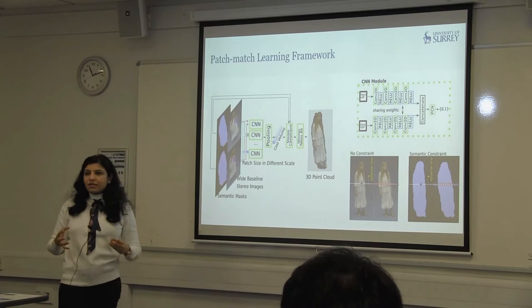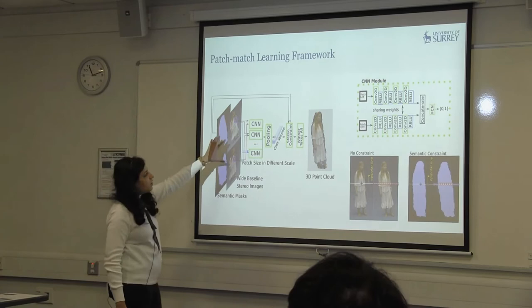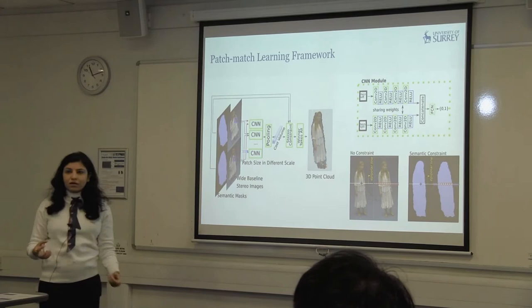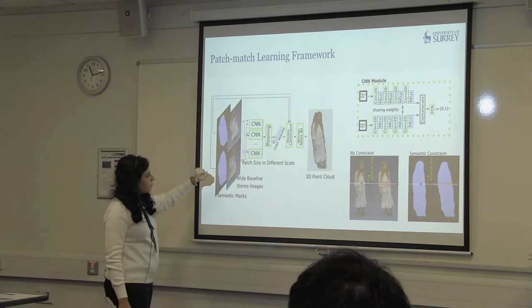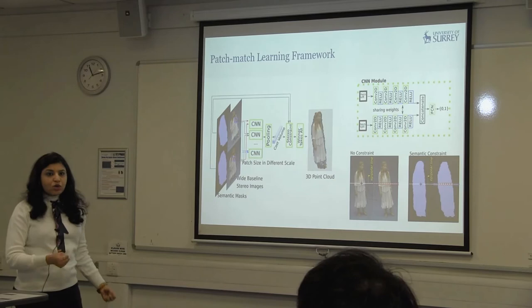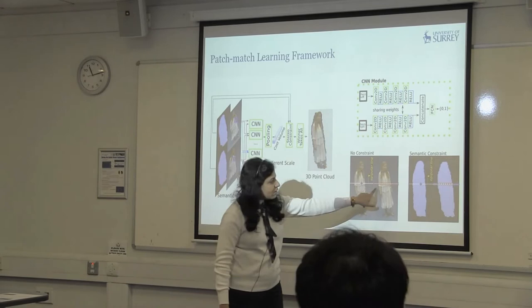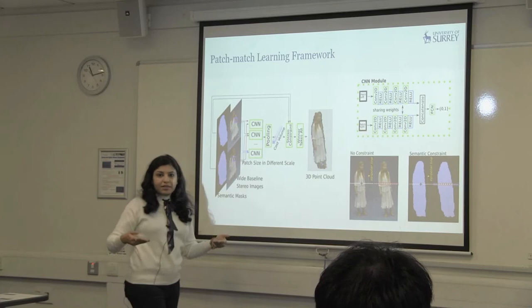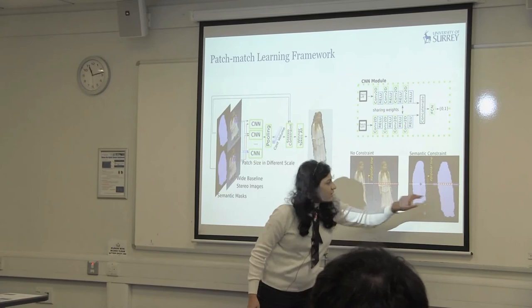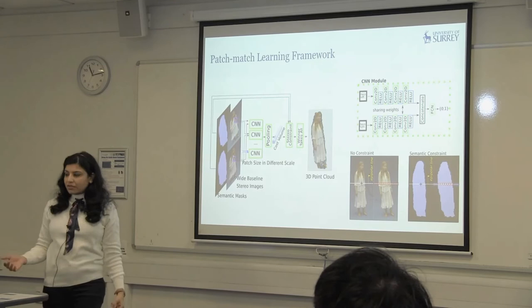The framework is inspired by MCCNN published in 2018, which proposed a CNN module — but that work only considered narrow baseline images of 5 and 10 degrees. We introduced additional layers to handle wider baselines. We also used semantic masks within the framework to constrain stereo correspondences — for example, we only search for correspondences within a constrained region along the epipolar line rather than the entire line. You take the images, rectify them so epipolar lines are aligned, and search for correspondences within the masked region, which improves results quite significantly.